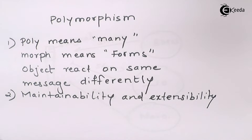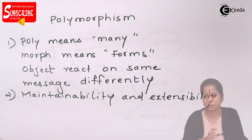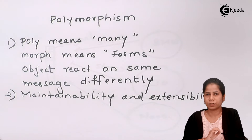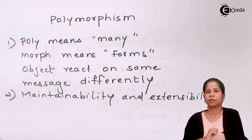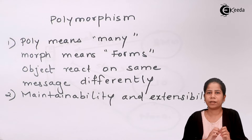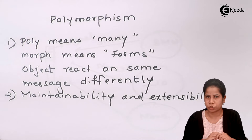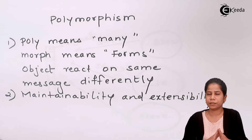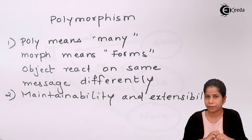Polymorphism — the name itself says it is a combination of two words: poly and morph. Poly means many and morph means forms, so many forms. It is nothing but different types of objects, different hierarchies of an object, reacting in a different way to the same message given to it.